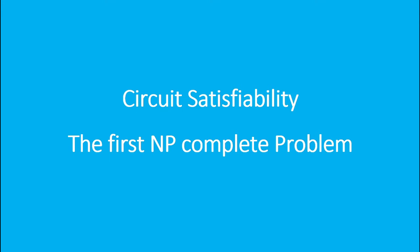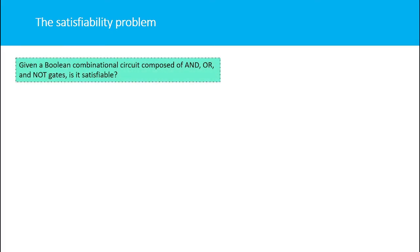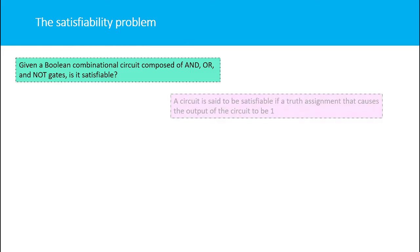The circuit satisfiability problem is known as the first NP-complete problem. You are given a boolean combinational circuit composed of AND, OR, and NOT gates, and you ask whether the circuit is satisfiable. A boolean circuit is said to be satisfiable if there exists a truth assignment that causes the output of the circuit to be one.